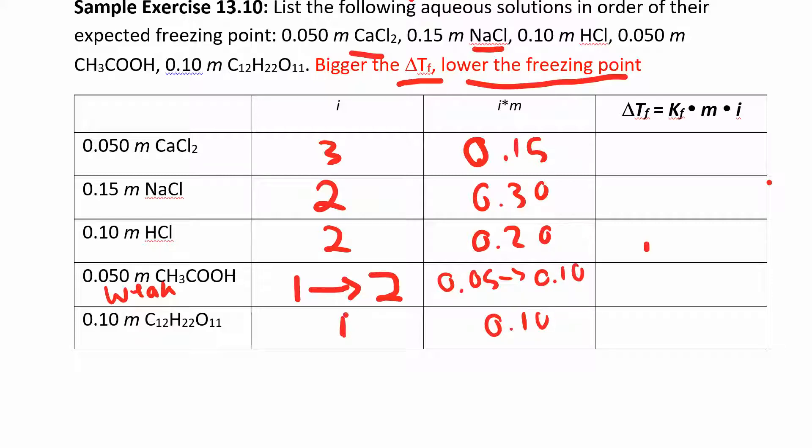So all I'm doing is multiplying the van't Hoff factor, this column by whatever number is in front of you, those molalities. And then you can also find the delta Tf, the change in the freezing point. And whichever number is the biggest, that's the lowest freezing point. Whichever number is the smallest means it's going to be closest to zero. It's going to be closest to water. It's not really a big change in freezing point. It'll actually have the highest freezing point.